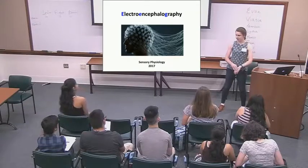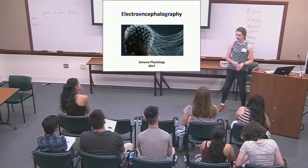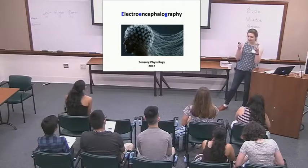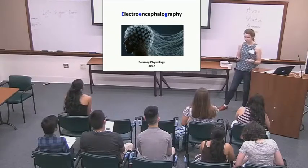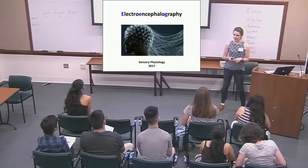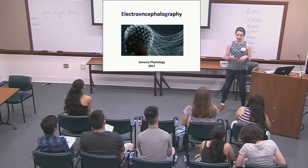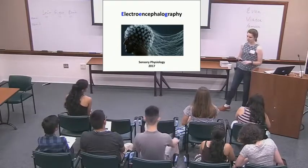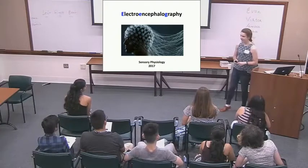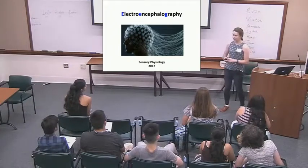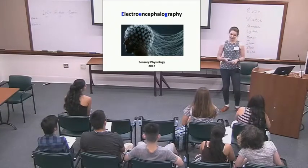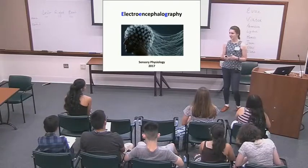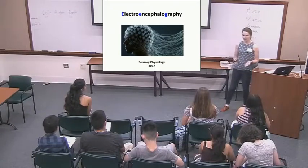What we've talked about mostly is the neurons that go to your skin when we were talking about the sense of touch and temperature, and today we've talked about the neurons that go into your eye. Your eye is a sensory organ for vision, and tomorrow we will also talk about the sense organs of the tongue and the nose for taste and smell.